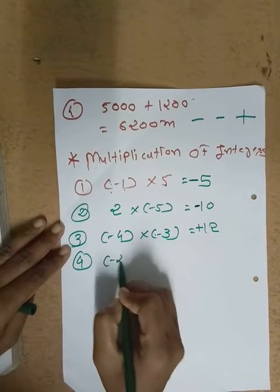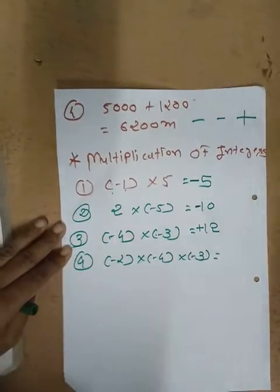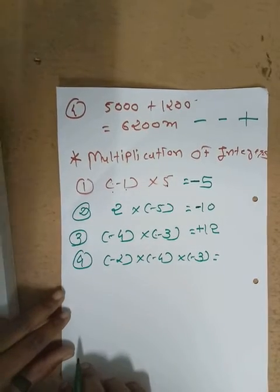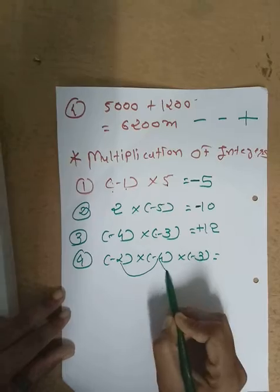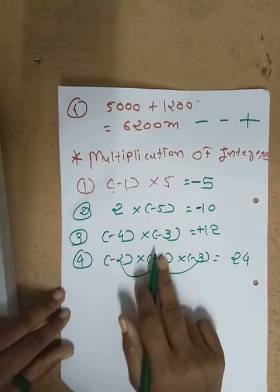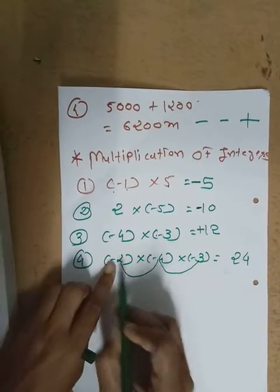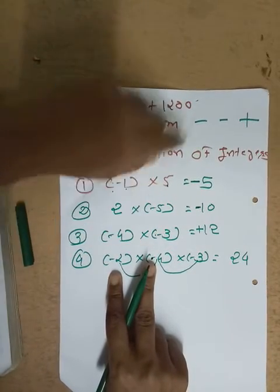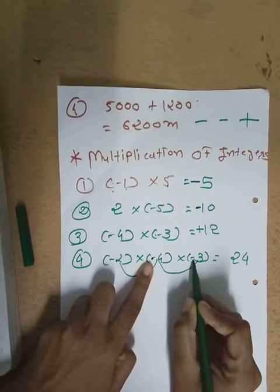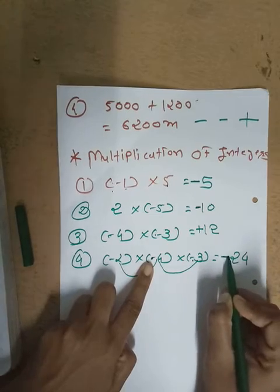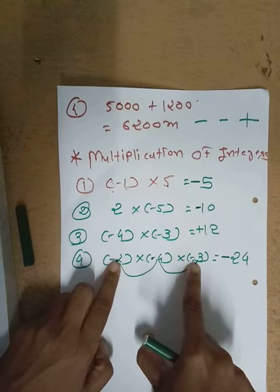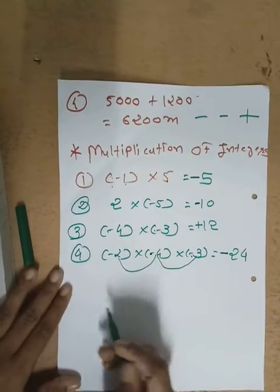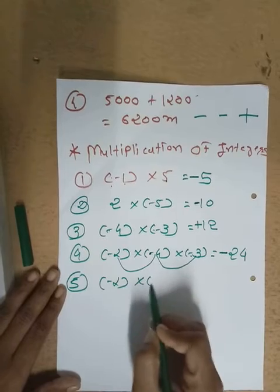Number four: minus two multiply by minus four multiply by minus three. Simple multiplication: two fours are eight, and eight threes are twenty-four. For the signs: minus minus gives plus, so those two negatives cancel. But one minus sign — minus three — remains. So the answer is minus twenty-four.